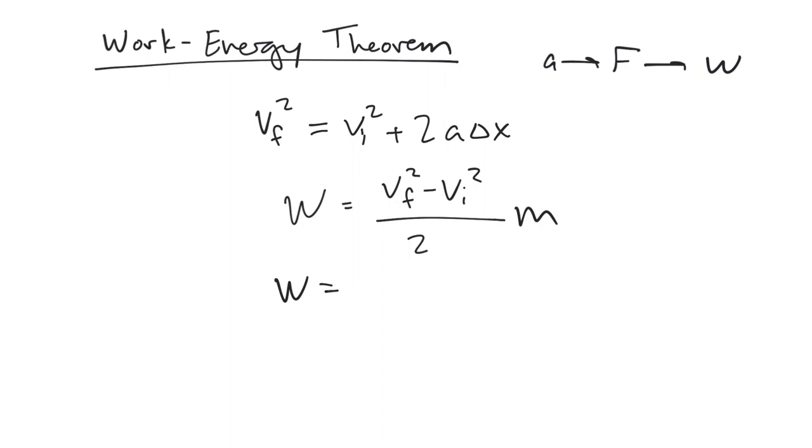So, we leave work as is, but we're going to pull that half out and multiply it by the M, and then distribute it out to the VF squared and the VI squared. So you get 1 half MVF squared minus 1 half MVI squared.